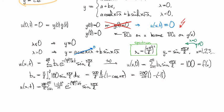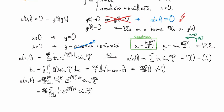I notice that this 1 minus negative 1 to the n, every other term drops out. And the ones that remain are equal to 2. So I could rewrite this as 400 over pi times the sum n equals 1 to infinity n odd of 1 over n e to the minus n pi over l squared k t sine n pi x over l. And that looks good enough for me. I will take that as my final solution.